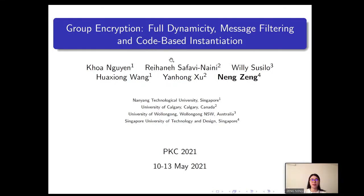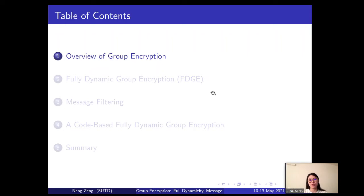Hello everyone. I'm going to talk about fully dynamic group encryption, message filtering, and code-based instantiation. It's a joint work with Kua Yuan, Rihanna Safir Yunani, Willi Su-Seer, Hua Xiong-Wang, and Yeong-Hung Xu. First I will record some background on group encryption and discuss the limitations and our motivation, then I will state our three contributions: fully dynamic group encryption, message filtering, and a code-based instantiation. Besides, I will describe the techniques, and last a summary.